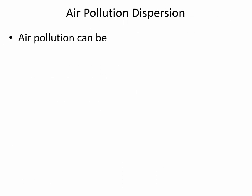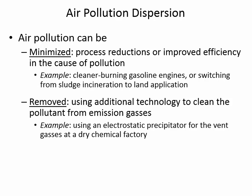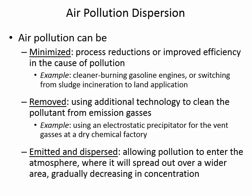Air pollution can ultimately go a couple of places. We'd really like to minimize it — by reducing energy use, by carpooling, or by changing engine quality to emit fewer particulates. There are also ways of removing air pollution before it gets into the air: you can put a filter in the smokestack, use a bag filter to trap particulates, or use electricity to attract small particles — that's called electrostatic precipitation. But even with minimization and removal, a lot of pollution still gets into the air.